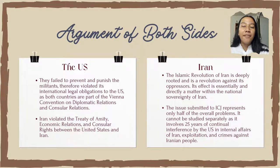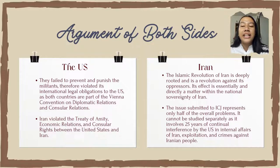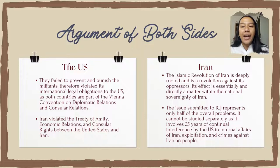The U.S. government argued that the government of Iran tolerated and encouraged the attacks of militants on the U.S. embassy compound. They failed to prevent and punish the militants, therefore violated their international legal obligation to the U.S., as both countries are party to the Vienna Convention on Diplomatic Relations and Consular Relations. Iran also violated its treaty of amity, economic relations, and consular rights between the United States and Iran.